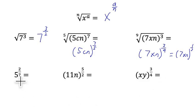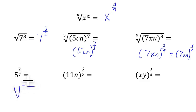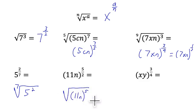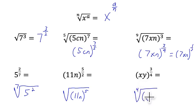Going the other way, the denominator is the root and the numerator is the exponent. So 5 to the 2 7ths power is the 7th root of 5 squared. 11n to the 5 5ths power is the square root of 11n raised to the 5th power. And xy raised to the 3 4ths power is the 4th root of xy to the 3rd power.